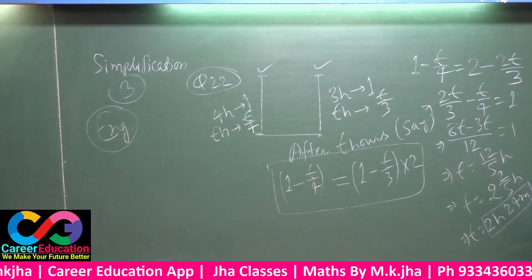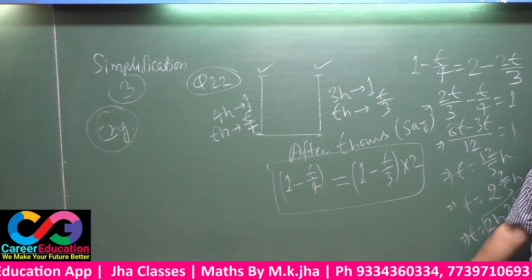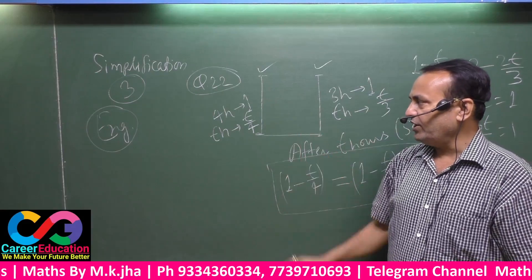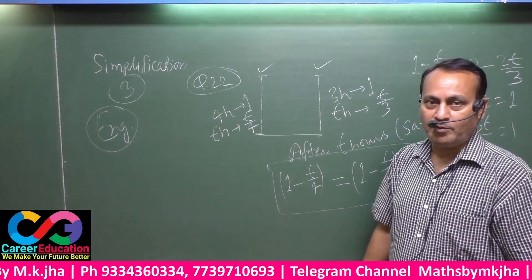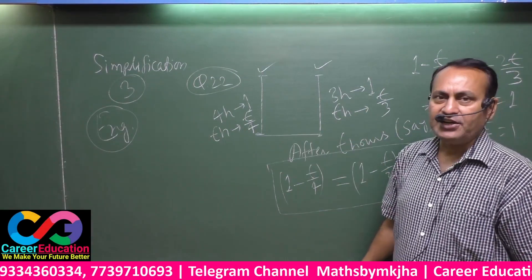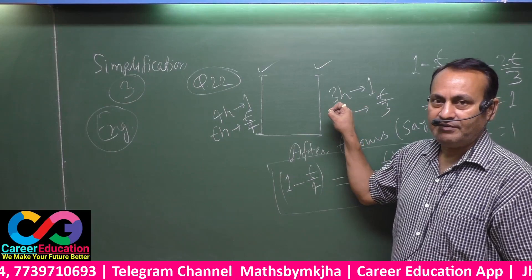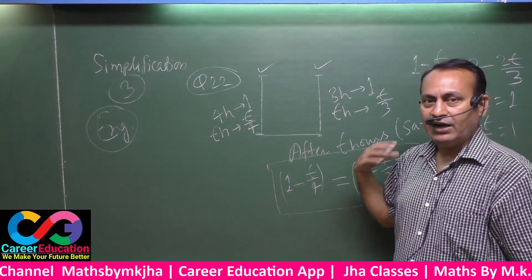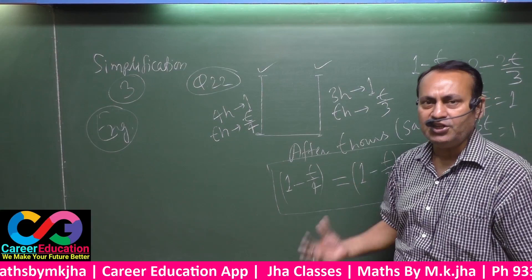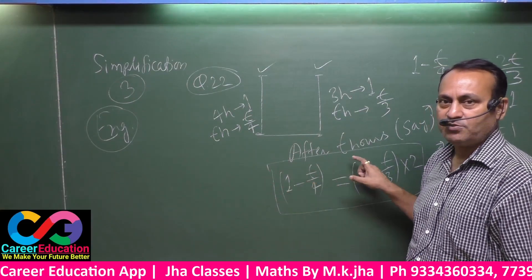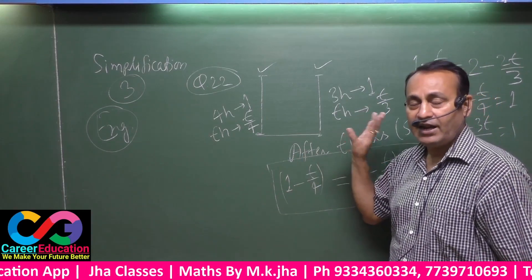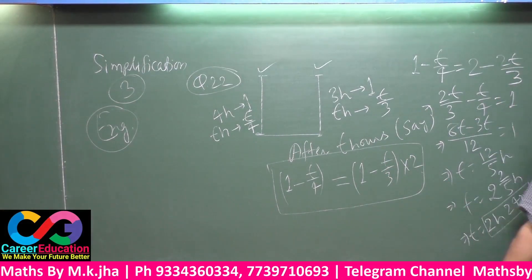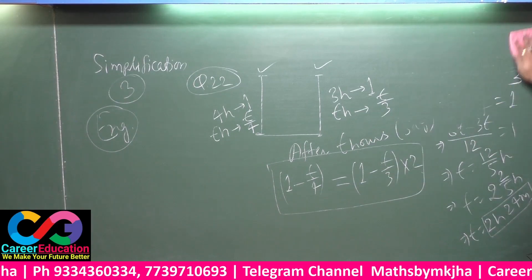This question can also be solved through the basic method. In four hours the first candle melts completely one unit, so in t hours it melts t by four units. Similarly, the second candle melts completely one unit in three hours, so in t hours it melts t by three units. The remaining length of the first candle is one minus t by four, and the remaining length of the second is one minus t by three. According to the question, this remaining length is just twice the other. Solving gives two hours twenty-four minutes, which is the correct answer.